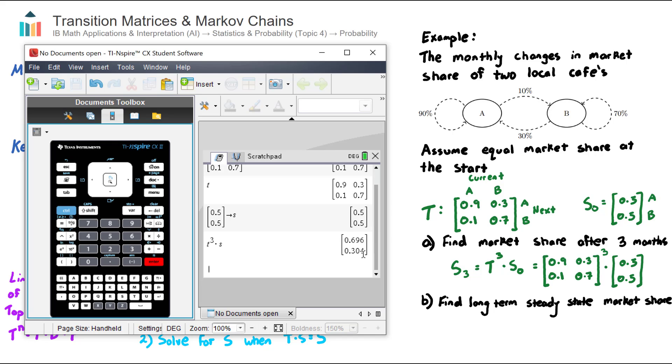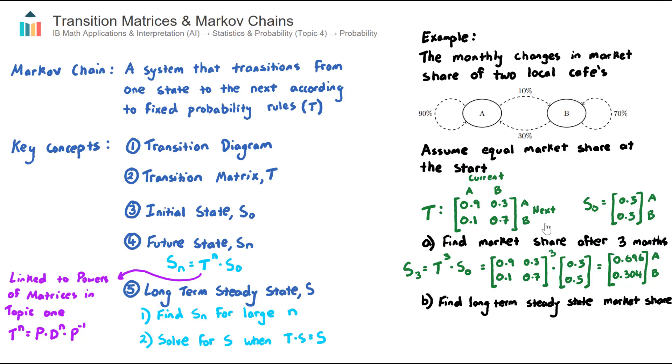Before we move on to key concept five, I just want to touch on that some of the harder questions involving transition matrices and Markov chains will ask to find an expression for a future state in terms of N. So we can't just go ahead and use our calculator to find the state after N periods. It's actually in terms of N. And that's actually linked to a concept in topic one matrices, all about finding the powers of matrices. And this is the formula here. There's a dedicated key concept video on that titled matrix powers involving eigenvalues and eigenvectors.